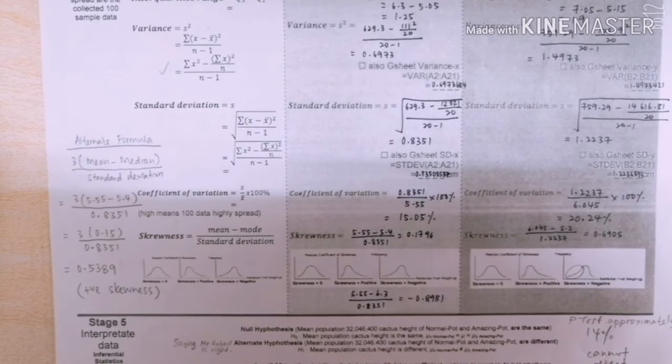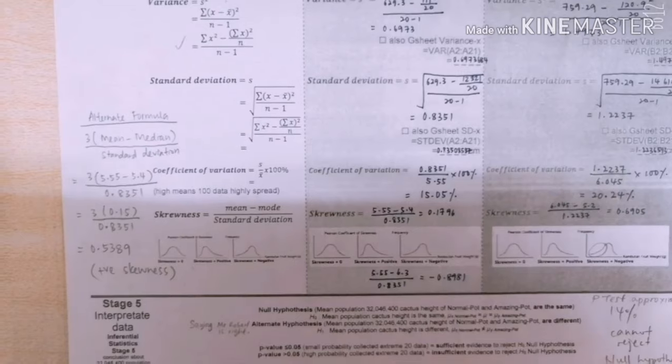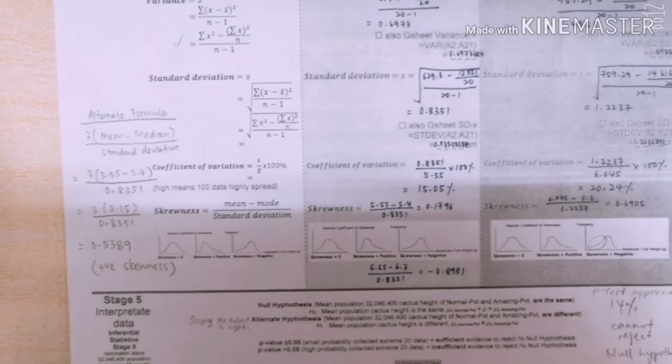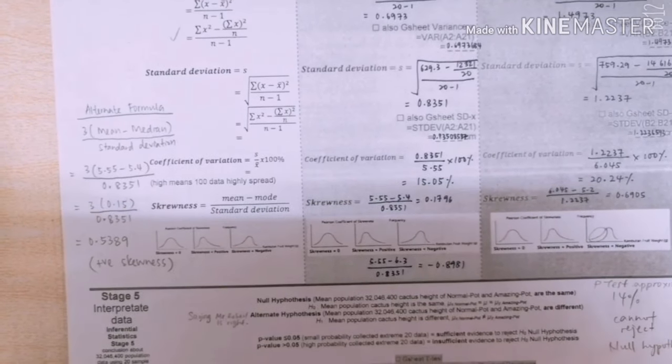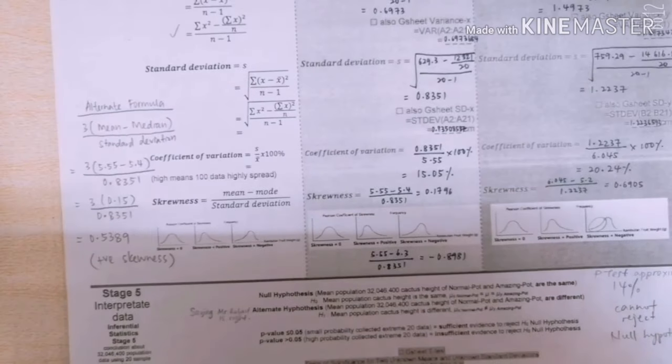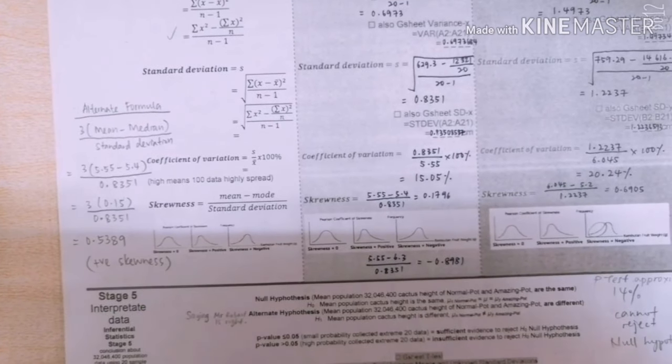Another alternate formula, which is to use three times mean minus median over standard deviation, we'll get 0.5389 that gives us a positive skewness. And then, as for the amazing pot, the mode, there's only one mode. Therefore, the skewness that we calculated is a positive skewness.